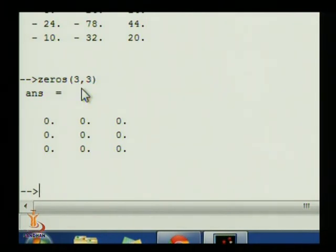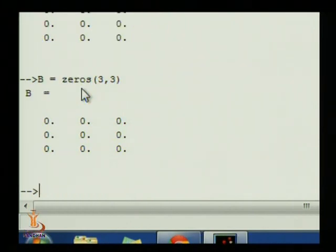Simply, you can assign one name to that matrix also says, B equals to zeros, 3, 3. Enter. It will show that now the matrix B has these elements.